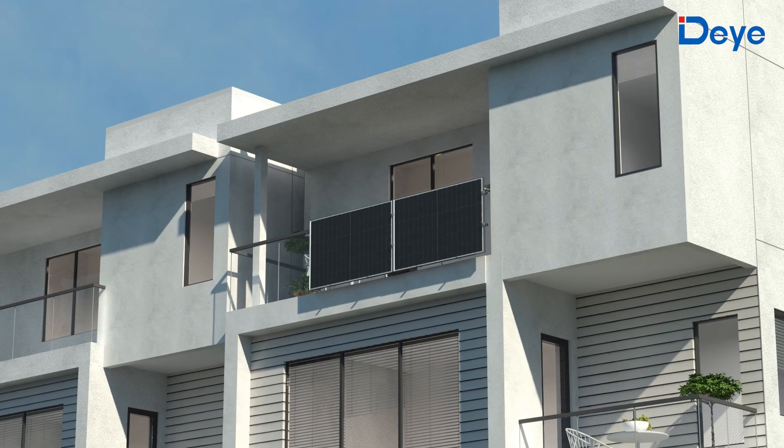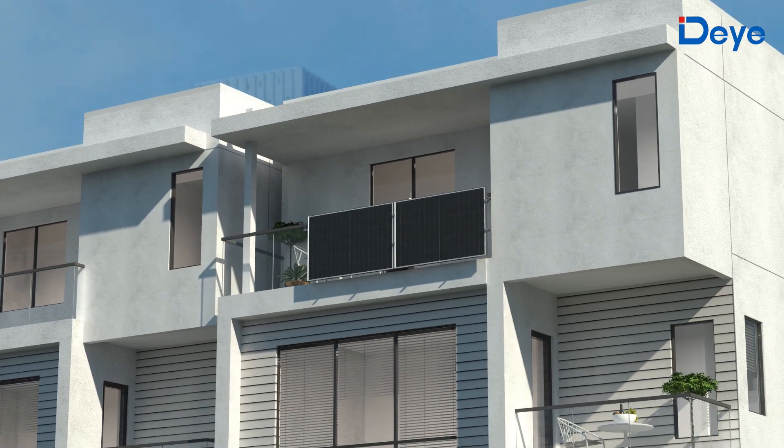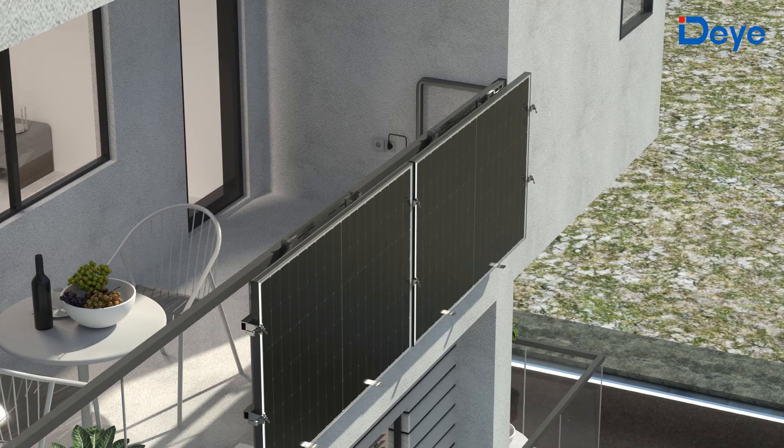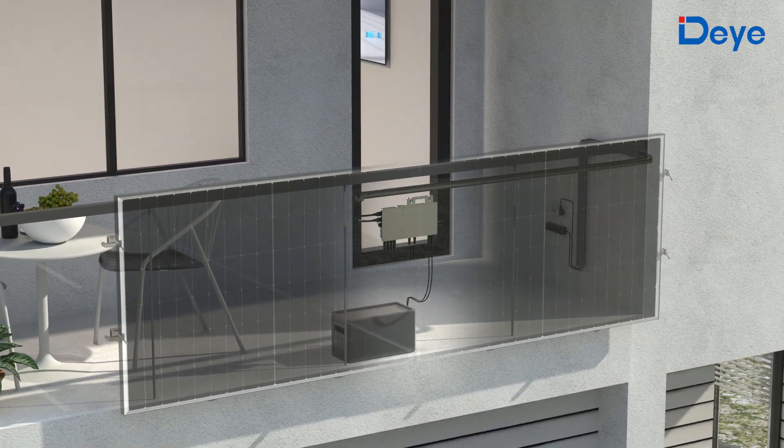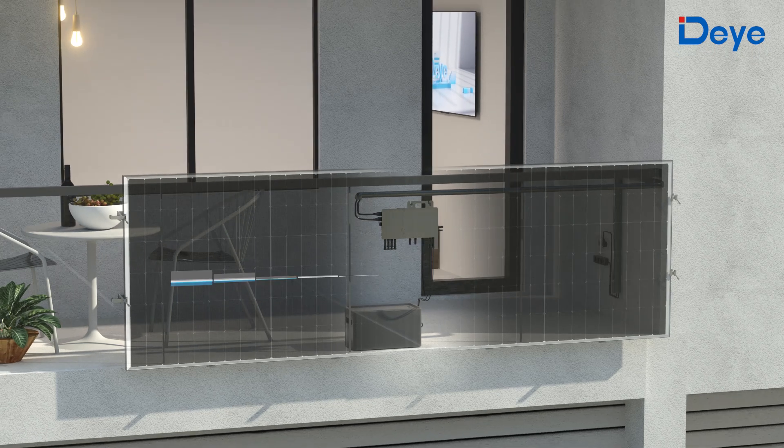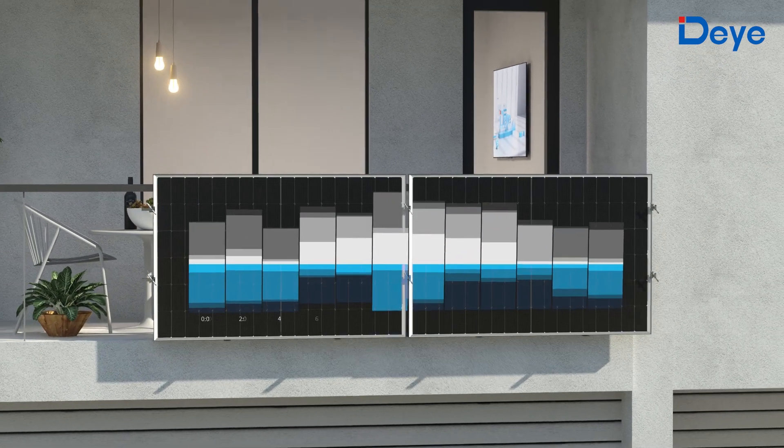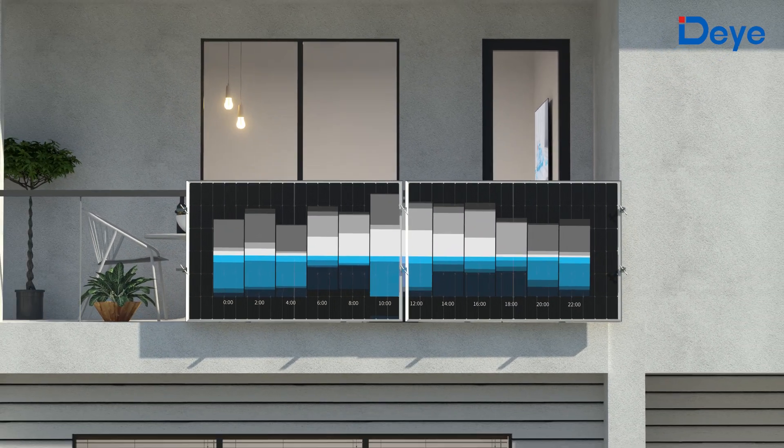The BK series energy storage microinverters also feature highly flexible smart electricity usage functions. Similar to Diaz hybrid inverters, 24 hours can be divided into up to six time periods for adjustable charging and discharging control.